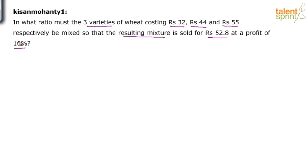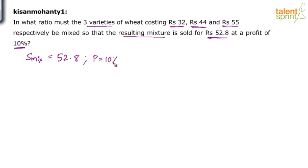First, find the cost price of the mixture. What is given: ₹52.8 is the selling price of the mixture along with the 10% profit. We have to work on cost price only in such questions. The three varieties' cost prices are 32, 44, and 55. For the mixture also we need the cost price. Selling price = 52.8 and profit = 10%, so the cost price of the mixture comes out to be 48.